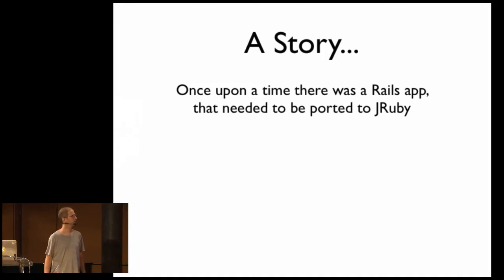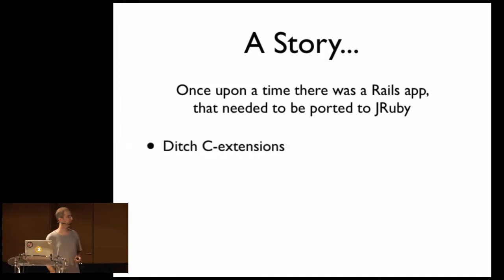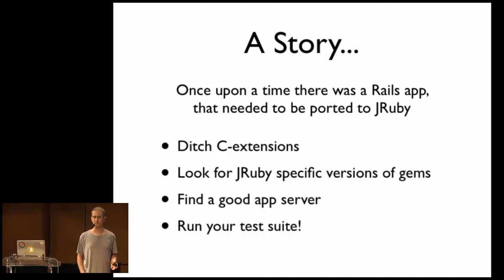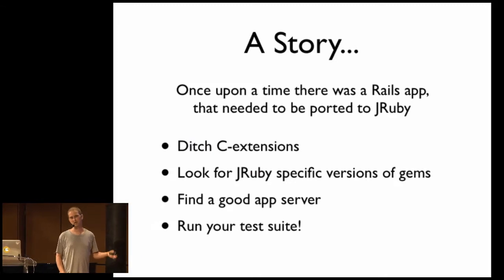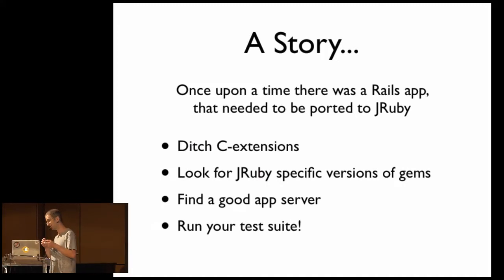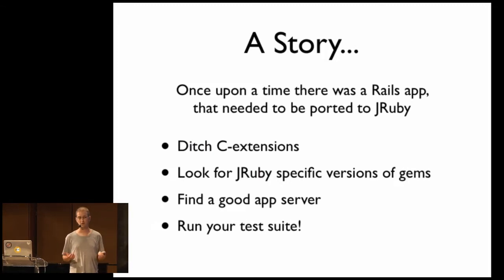So the story begins with a Rails app, as so many do, and in this case, it was an app that we were porting from MRI to JRuby. Now, there's a fairly standard script that you're going to follow if you ever have to do this. You have to get rid of C extensions. In our case, we were only using one, and it was pretty easy to replace it. You are going to want to look for JRuby-specific versions of your gems. Things like Nokogiri have pure Java implementations, but there's other gems where they might work with JRuby, but there might be an alternate gem that actually works even better with JRuby, because JRuby, of course, benefits from the entire Java ecosystem.